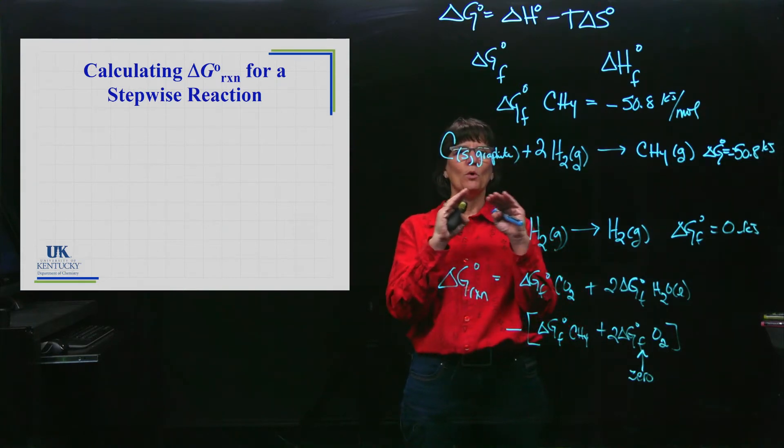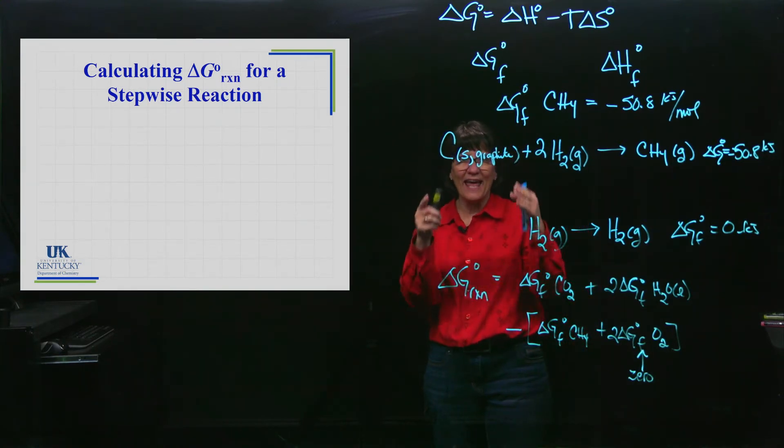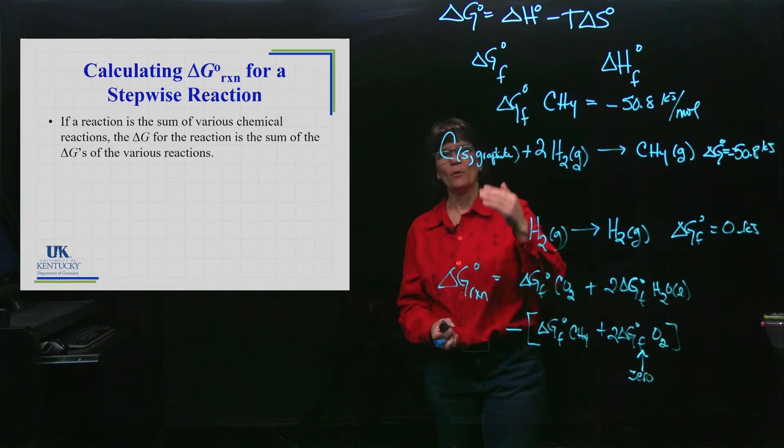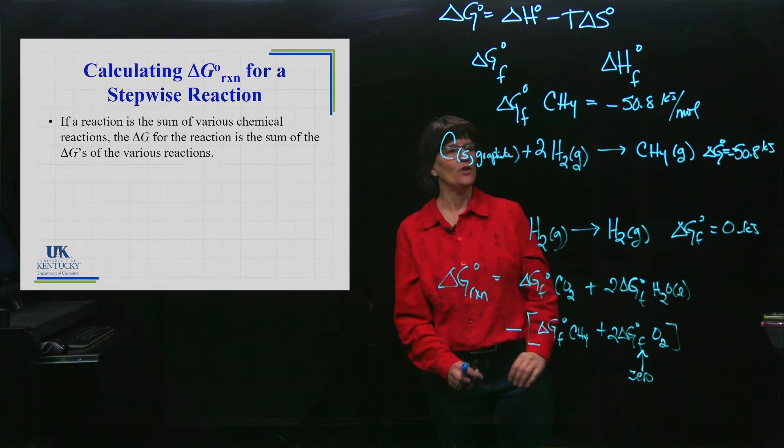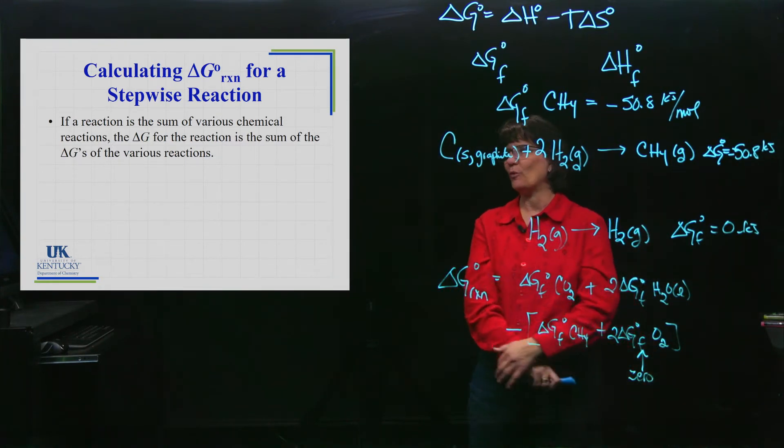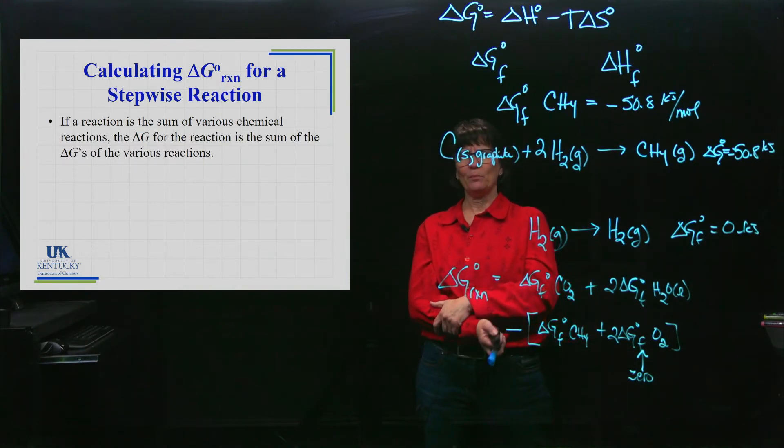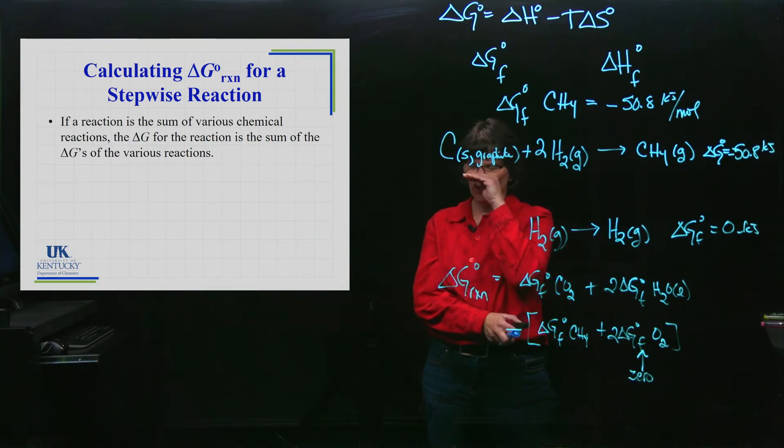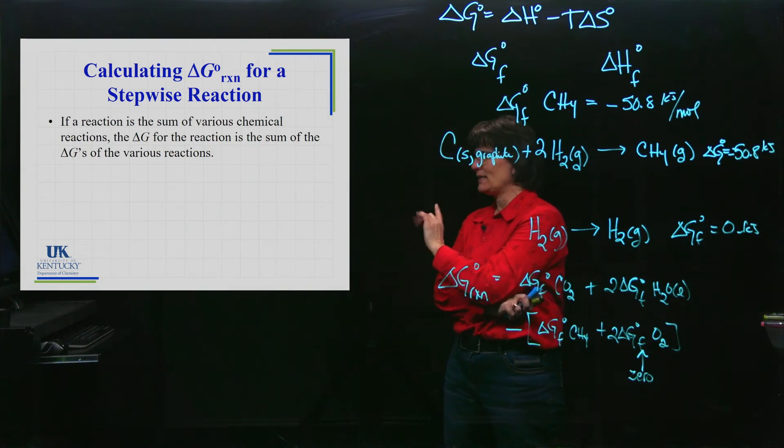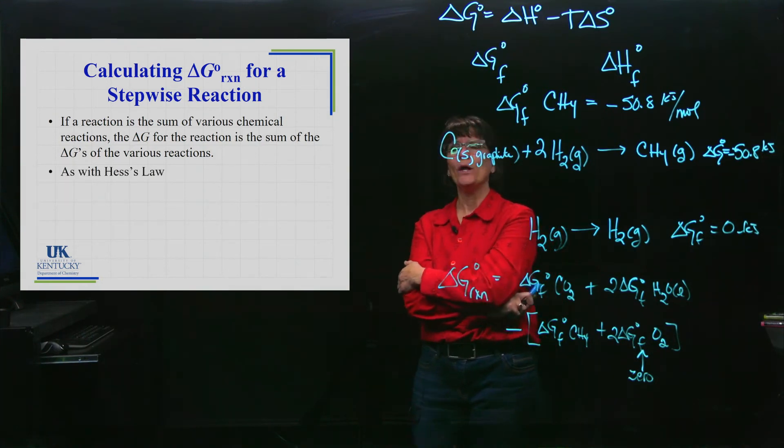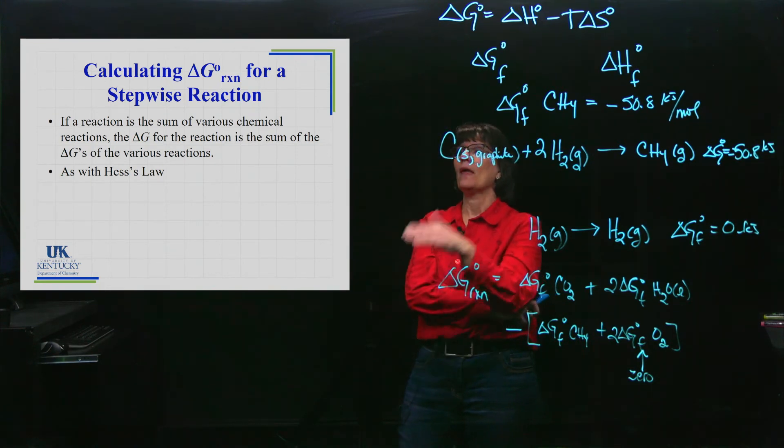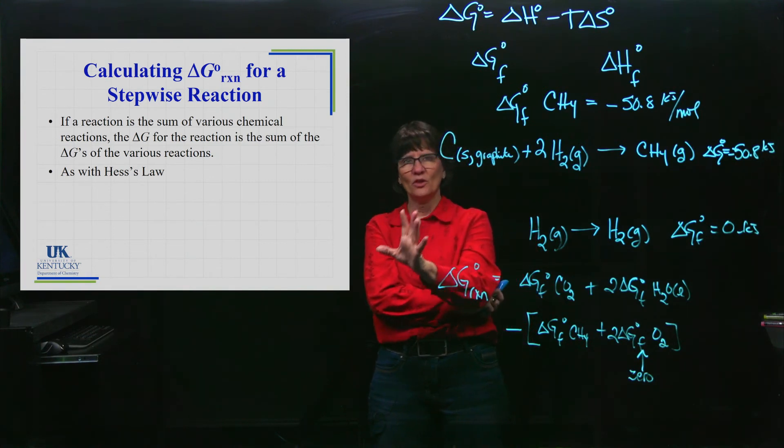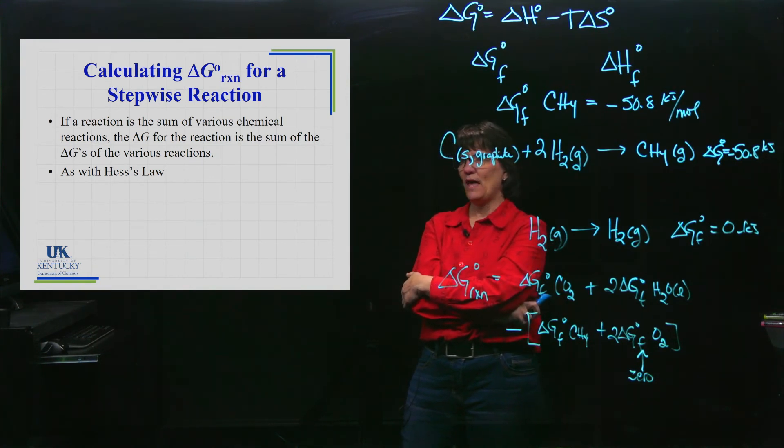You're given multiple reactions and you would manipulate those reactions and add them up to get the reaction you're looking for. If a reaction is a sum of a series of reactions, you can take the Delta G's and add them together to get the Delta G of the overall reaction. I'm not going to show you an example of that, and I'm not even sure if you will be required to do that at this point, but I do want to mention it because we did this with Hess's law. We learned how to calculate Delta H using Hess's law, adding up these reactions.